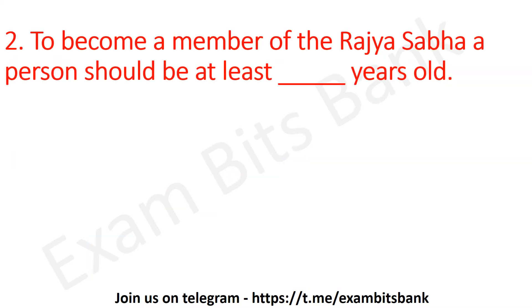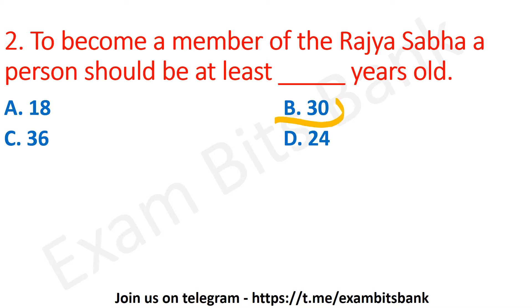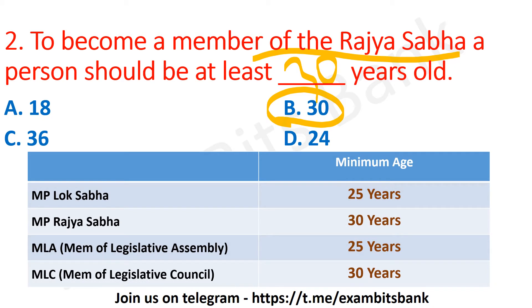To become a member of Rajya Sabha, a person should be at least how many years old? The options are 18, 30, 36, or 24. The correct answer is option B — 30 years. The minimum age for an MP of Lok Sabha is 25, for Rajya Sabha it is 30, for an MLA (Member of Legislative Assembly) it is 25, and for MLC (Member of Legislative Council) it is 30 years.